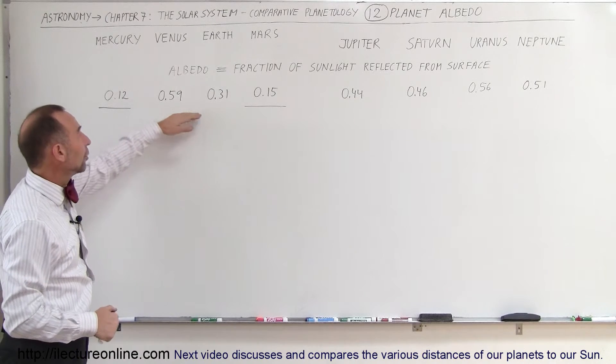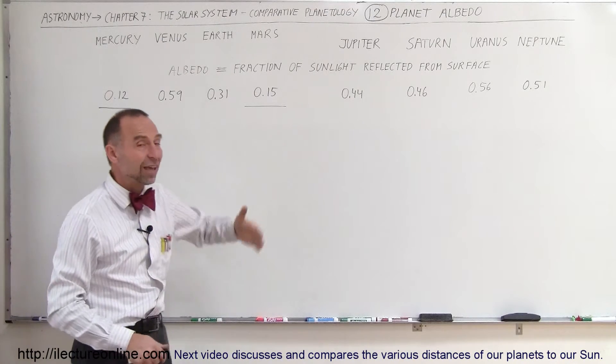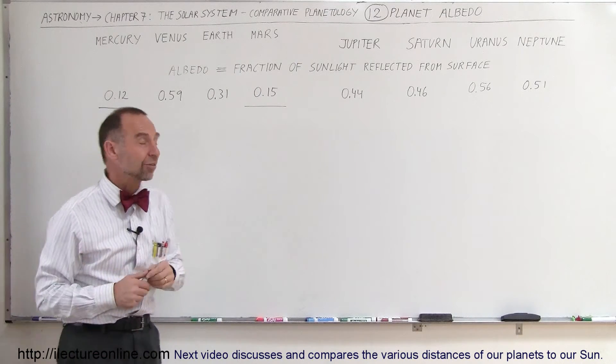Notice Venus and Earth. Now, Venus has a much greater albedo. Matter of fact, if you look at all the numbers, Venus has the greatest albedo of all the planets in the solar system.